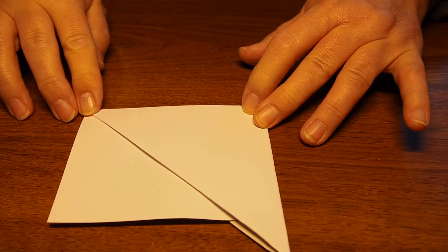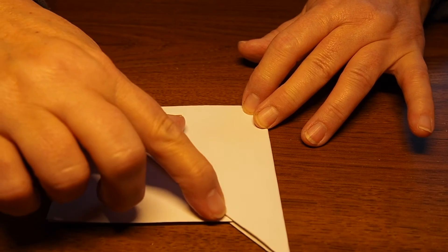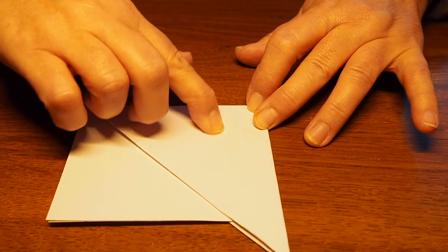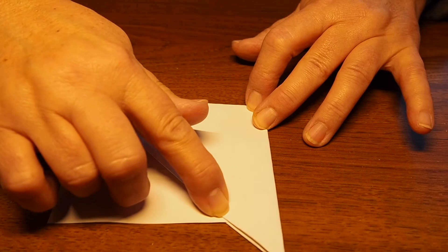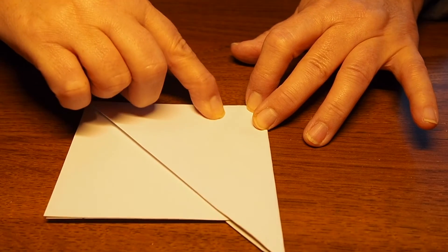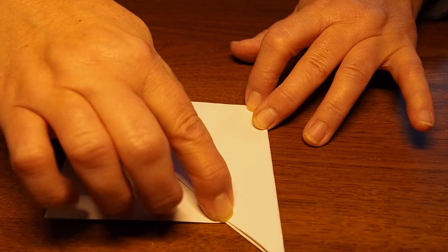Now if you visualize a line about an inch from the pointy end down there, we're going to tear the paper down that imaginary line. The thinner your paper is, the easier it will be to tear it.